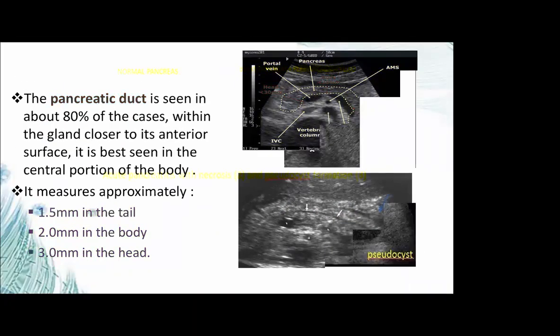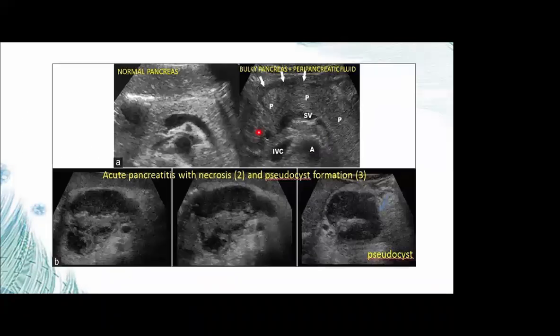On ultrasound, differentiation between normal and abnormal pancreas includes: normal pancreas, enlargement of the pancreas (bulky, oedematous), and pancreatic fluid collection or pseudocyst formation in chronic pancreatitis.